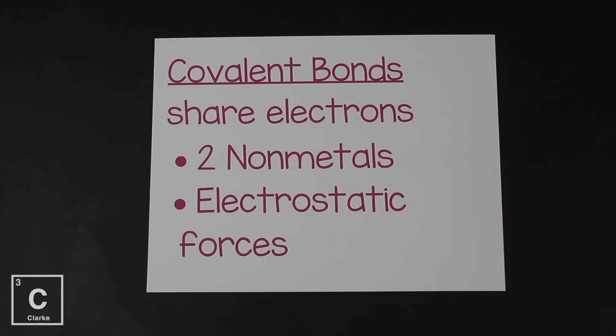Now this type of bond forms between two non-metals and it forms due to an electrostatic force. Now there's two types of covalent bonds: polar covalent and non-polar covalent. The difference is how they share electrons.